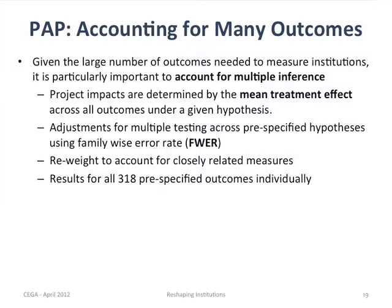We have 300-plus outcomes, so by chance a lot of those are going to be significant. We handled this multiple inference problem in a few ways. First, we grouped outcomes under hypotheses and tested a mean effect across all outcomes under one hypothesis as our primary metric — reducing the number of statistical tests from 318 down to 12 hypotheses. But we're still testing 12 hypotheses, so we corrected our standard errors using a family-wise error rate correction. We also do a robustness check that downweights outcomes closely correlated with one another. And in full transparency, we put up in the appendix individual-level effects for everything we tested.